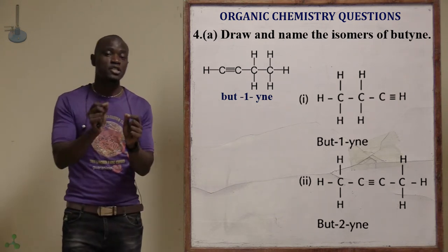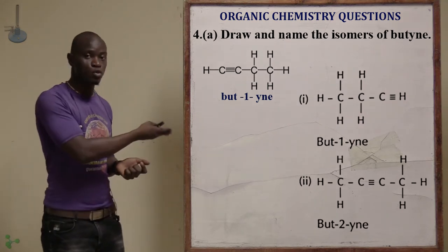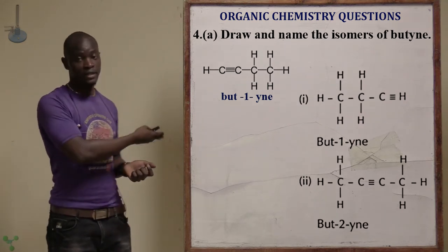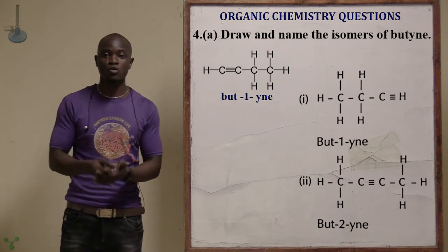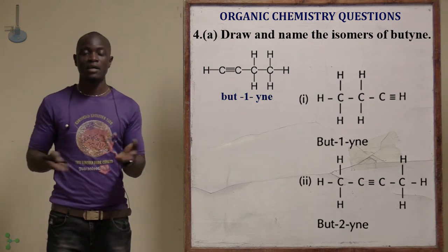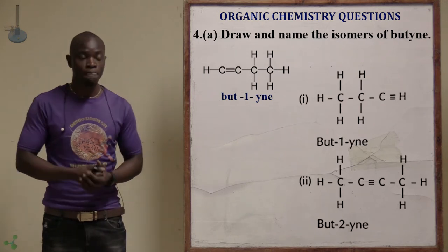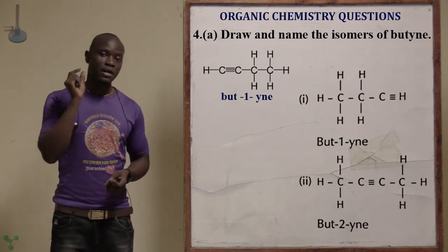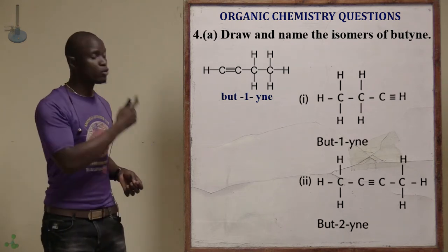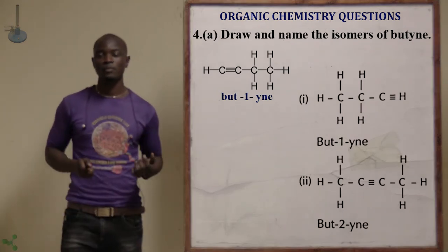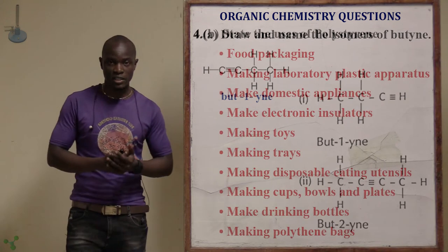You can change the structure or change the position of the triple bond. For example, this is but-1-yne and this is but-2-yne. Remove the triple bond from the first carbon, place it on the second carbon, and you have another isomer. These are the isomers of butyne — it's just that simple.